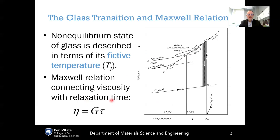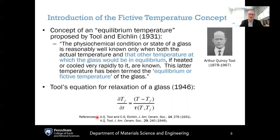Another important relation is the Maxwell relation, which connects the viscosity eta of the supercooled liquid or glass with the relaxation time tau of the system. The proportionality constant between viscosity and relaxation time is the shear modulus G. In this lecture and in the literature, viscosity is often used as a stand-in for the relaxation time, or vice versa, because they are proportional to each other via the shear modulus.